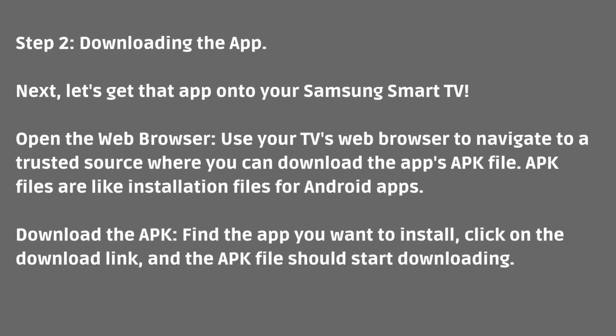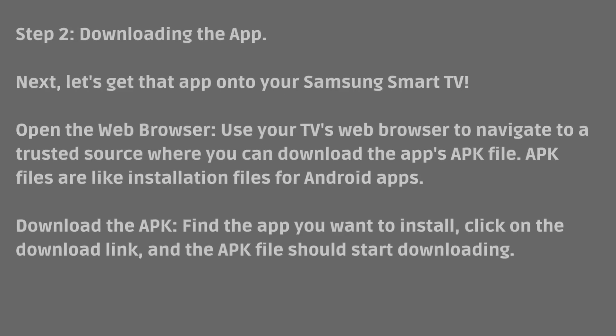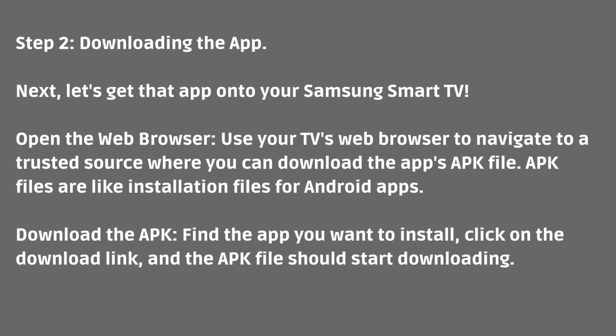Step 2: Downloading the App. Next, let's get that app onto your Samsung Smart TV. Open the web browser and use your TV's web browser to navigate to a trusted source where you can download the app's APK file. APK files are like installation files for Android apps. Find the app you want to install, click on the download link, and the APK file should start downloading.